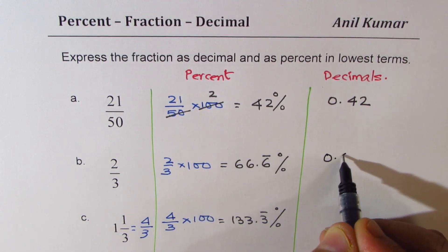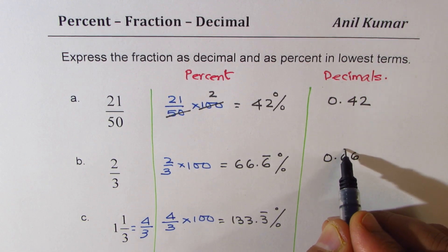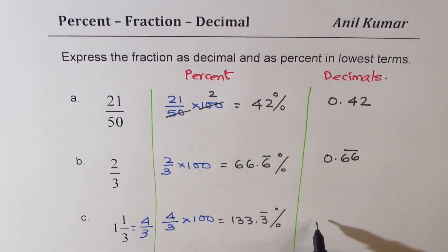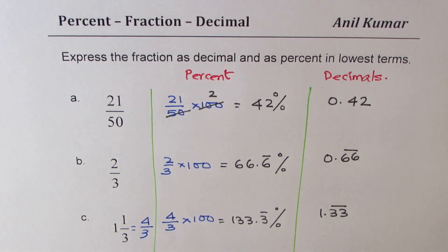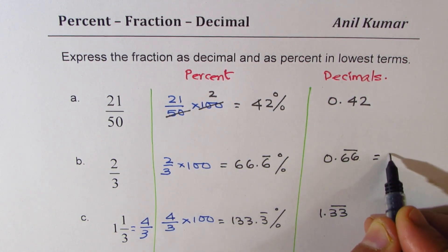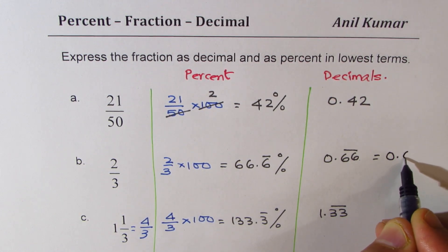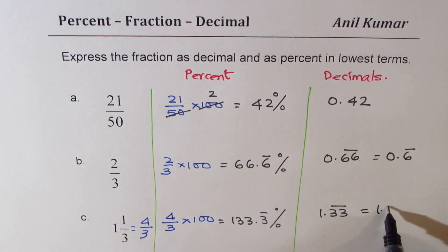Here you get 0.66 recurring in decimals. And in this last case you get 1.33 recurring in decimals. It is not good practice to write 6.6 recurring — I prefer to write only 0.6 recurring, since it means 6 repeats. Similarly, 1.3 recurring.